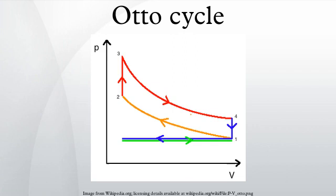In the case of the Otto cycle, the effect will be to produce enough net work from the system so as to propel an automobile and its occupants in the environment. The Otto cycle is constructed from, at top and bottom of the loop, a pair of quasi-parallel isentropic processes, and at the left and right sides of the loop, a pair of parallel isochoric processes.